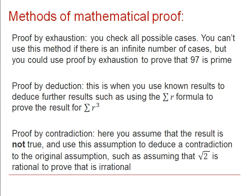Thirdly, you could prove by contradiction. Here, you assume that the result is not true, and then use this assumption to deduce a contradiction to the original assumption. This can be used for something such as square root of 2 is rational to prove that it is irrational.